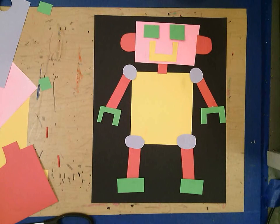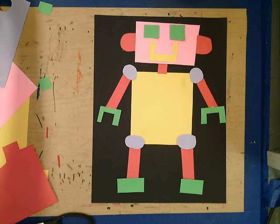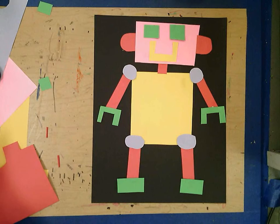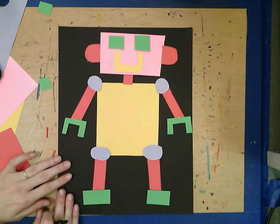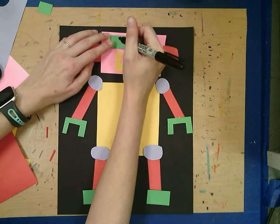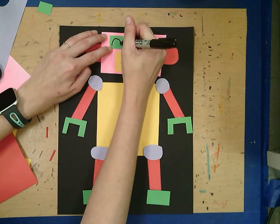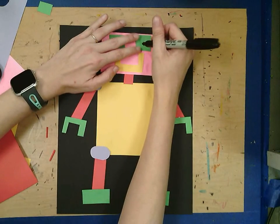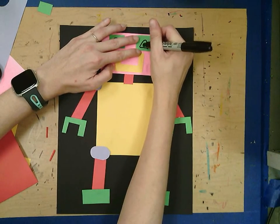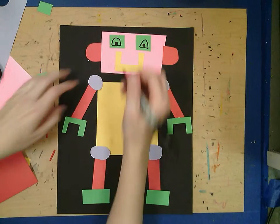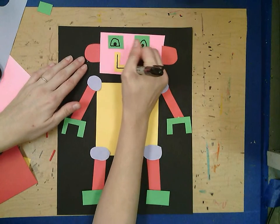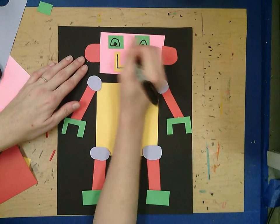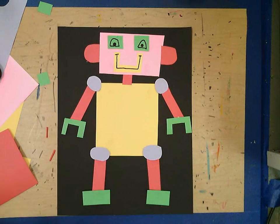Now once you're done gluing, then you're going to take your marker and you're going to draw whatever kinds of details you want. So I could finish out my robot's eyes with my marker. Now my glue is not dry yet, so I gotta hold my pieces extra still while I'm working. I could add a little to his mouth, make him look a little happier.